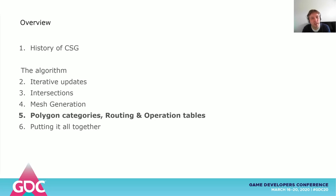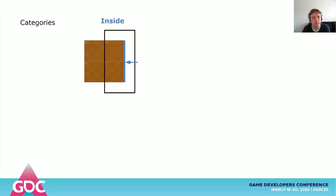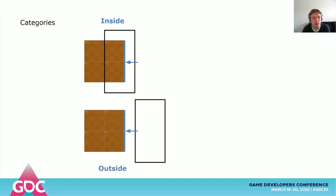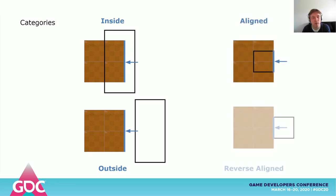How do we figure out what to do with each polygon piece — if it should be removed or not, or flipped? This is the heart of the algorithm and the most complicated part. To determine what polygon will be visible we need to categorize each polygon piece. Now imagine the final solid shape we want to create. If our polygon is inside it, it will be invisible and would need to be removed. If it's outside of it, it's not part of the final shape and also needs to be removed. If it's aligned with it, we want to keep it. But if it's reverse aligned — facing in the opposite direction — we need to flip it. These are the four categories we need to determine.